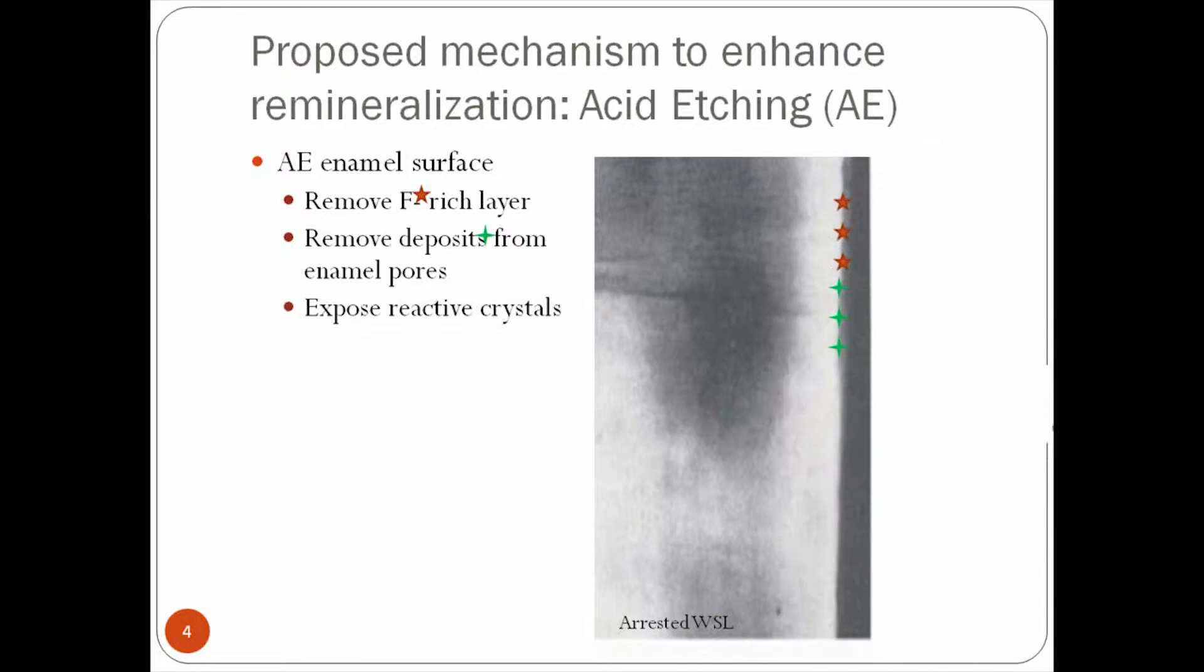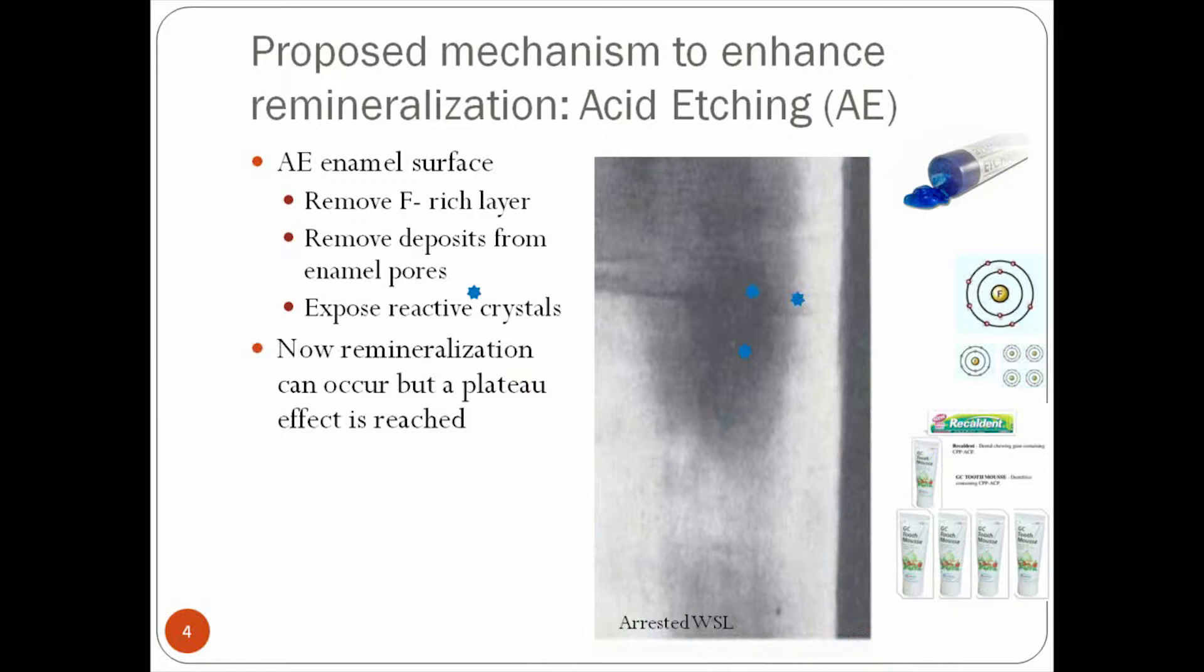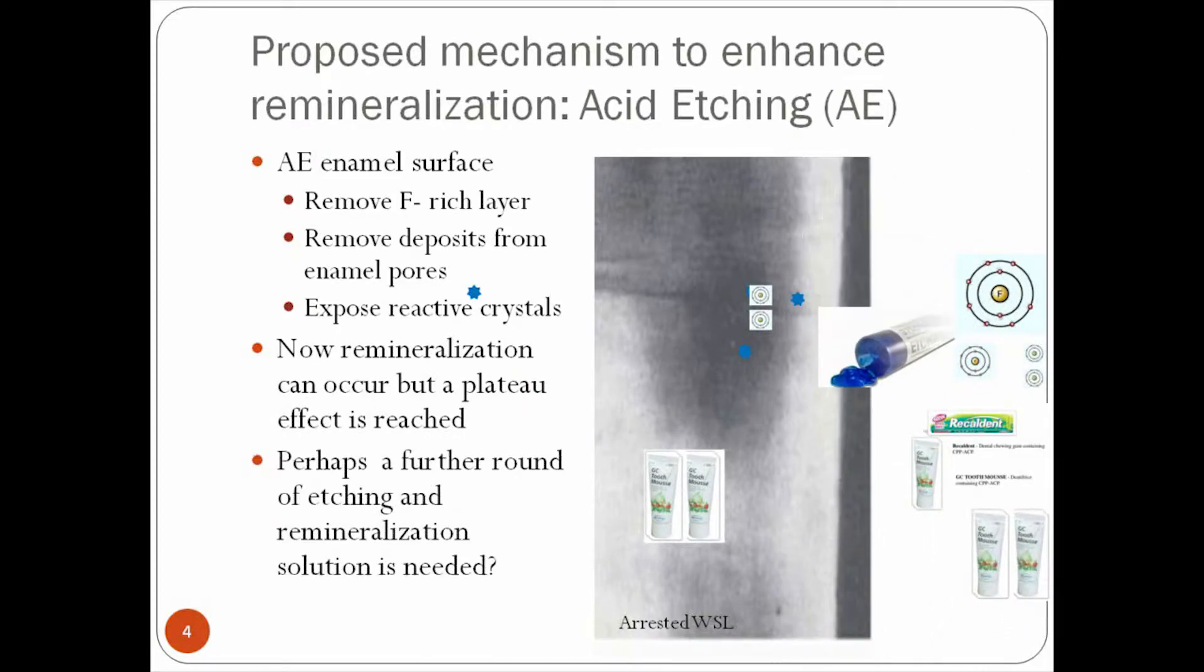And when we do that, when we rub that acid etch onto the surface, we lose the fluoride and the deposits, and we expose the reactive crystals. Now, we have remineralization. And I want you to think about what we said before, the calcium and the fluoride. But we can only put so much in because you'll get a plateau that is reached. And maybe we can get more of the fluoride and the calcium and minerals into the white spot lesion if we do another round of remineralization, another round of acid etching.